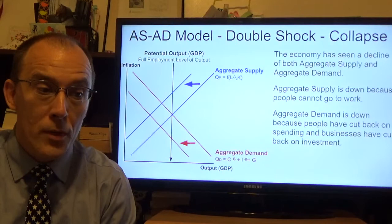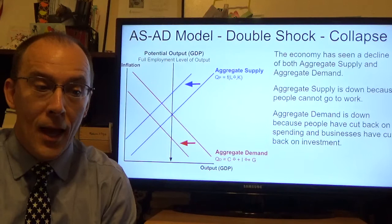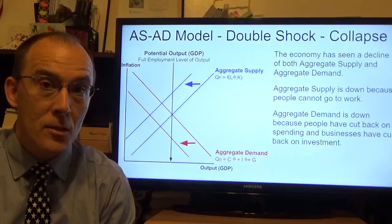First, the aggregate supply curve contracted because the amount of workers in the economy decreased. Quite simply, people could not go to work — states had stay-at-home orders — and so you took a lot of people out of the economy, which makes it very hard for companies to produce things.